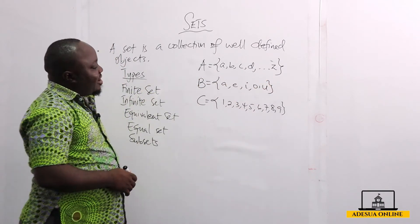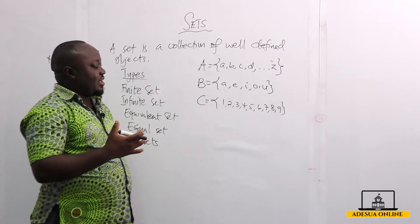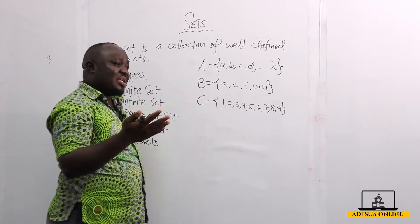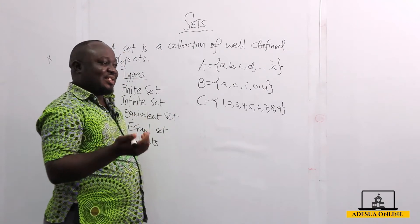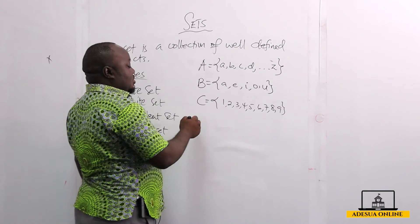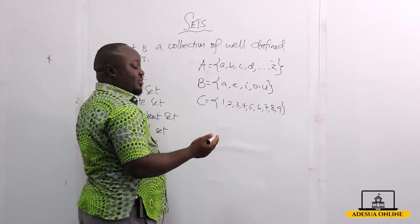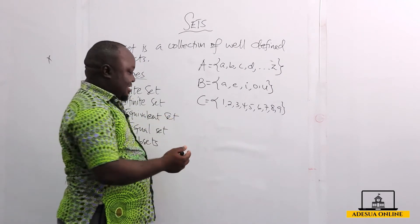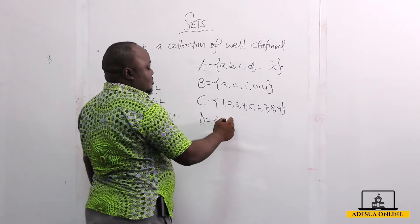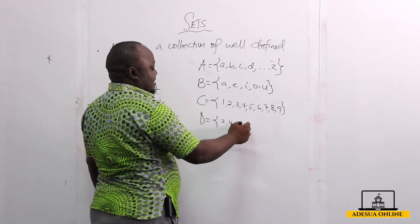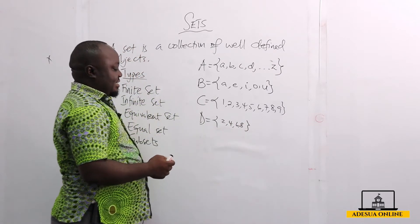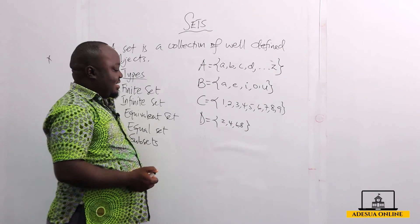If I want the set of positive even numbers less than 10, I can have a set D equal to 2, 4, 6, 8. So these are the members of that set — positive even numbers less than 10.